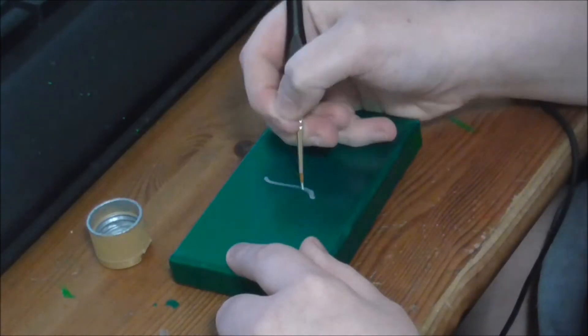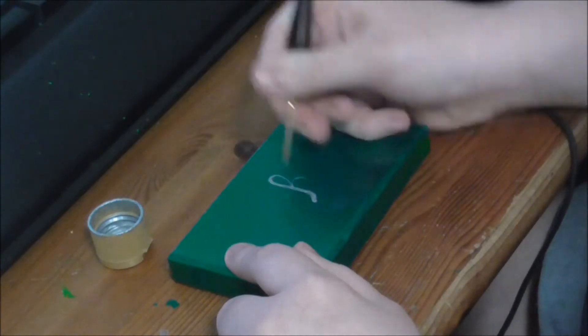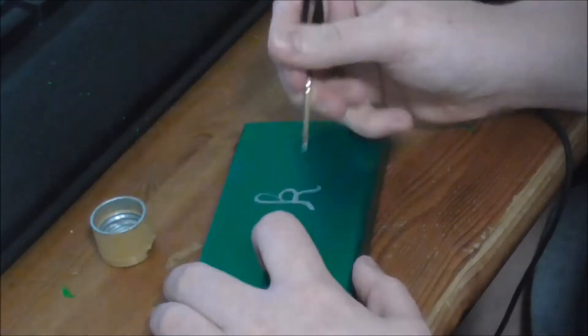Next I used my silver paint to paint Sky's name onto the box in as fancy a font as I could get.